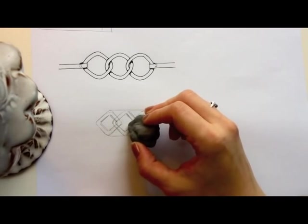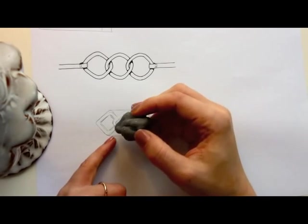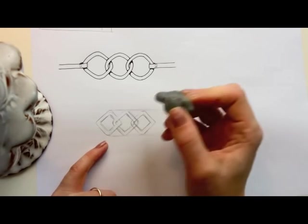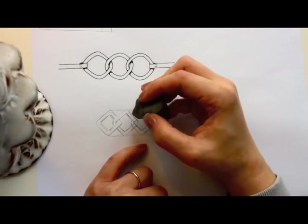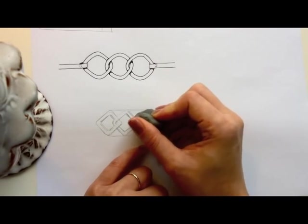So again, ring two is going over ring one, so we'll erase ring one's lines here. And then ring one's lines are going over ring two, so we'll erase ring two's lines there. And then ring three's lines go over ring two, so we'll erase ring two's lines.